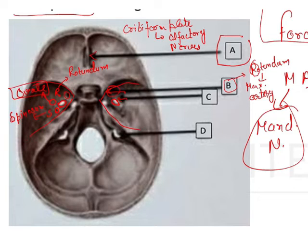Then you have C, which is going to be your foramen ovale, and this gives passage to the structures in the mnemonic MALE. M is going to be your mandibular nerve, and that is what we have to find here as well.